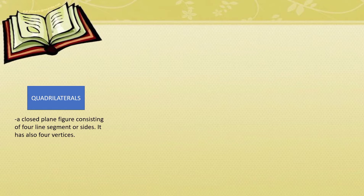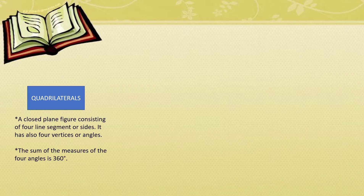A quadrilateral is a closed plane figure consisting of four line segments or sides. It has also four vertices. And remember that the sum of the measures of the four angles is 360 degrees.